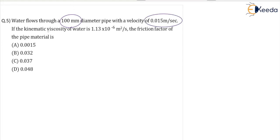The kinematic viscosity of the water is 1.13 × 10^-6 m²/s. Find the friction factor of the pipe material.